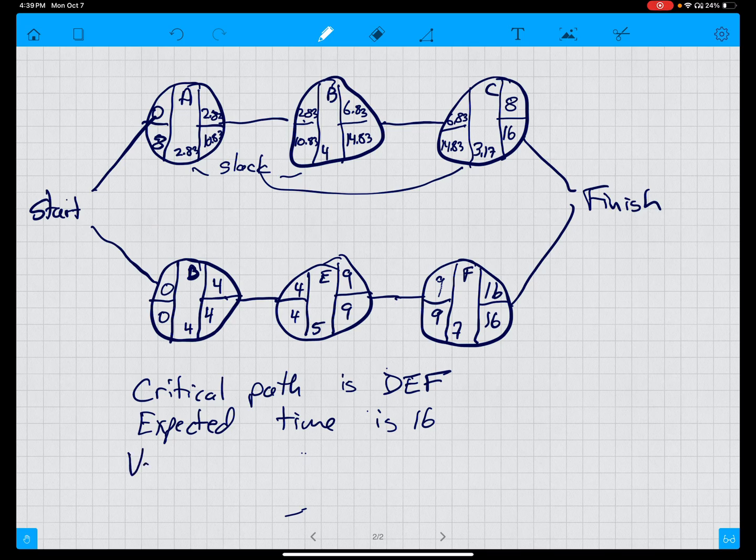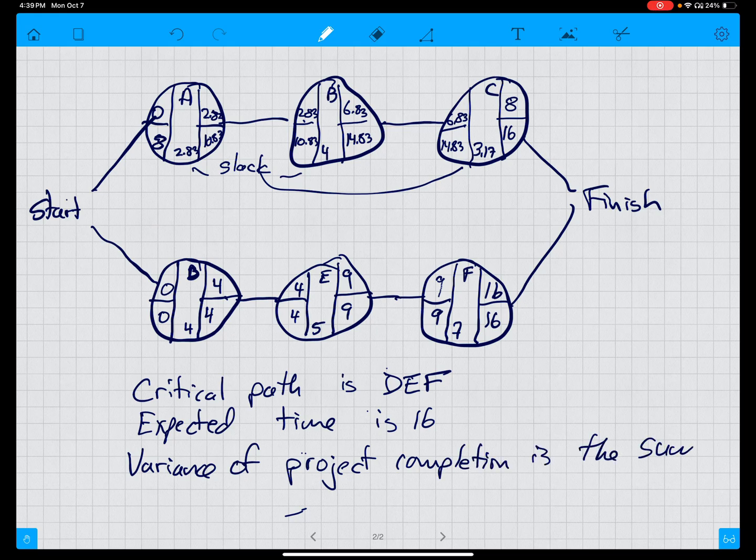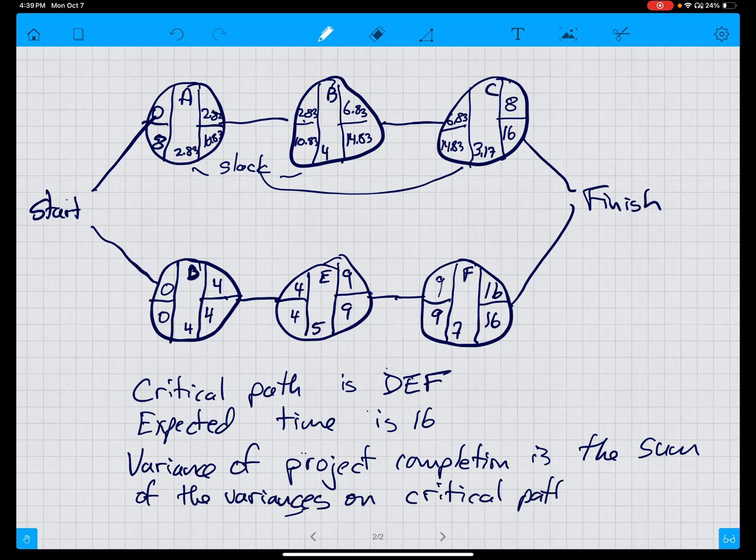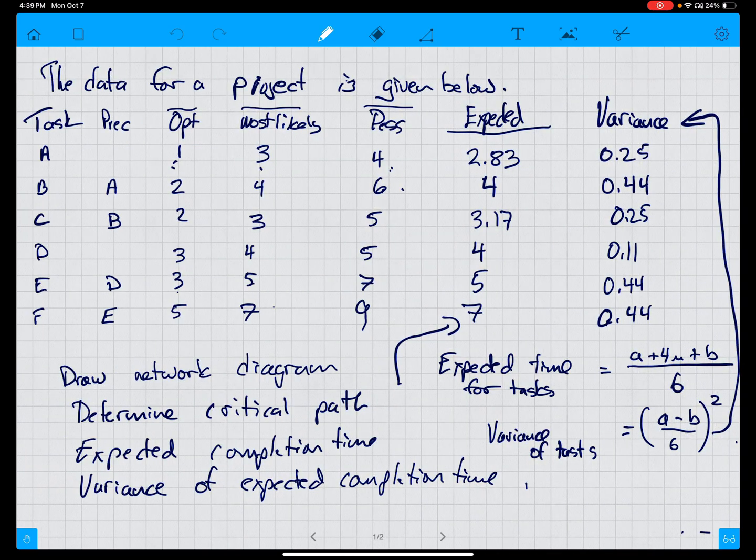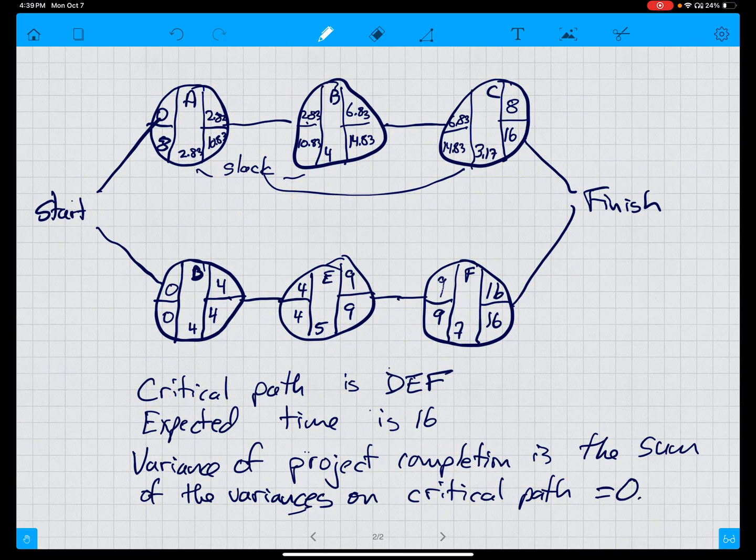And the variance of project completion is the sum of the variances on critical path. So DEF would be 0.11 plus 0.44 plus 0.44 equal to 0.99. So there we have the basics of the project network. We've looked at the precedents diagram, we've done left to right, we've found the critical path.